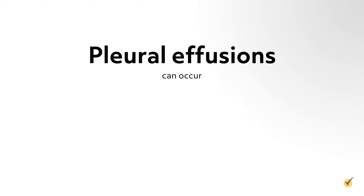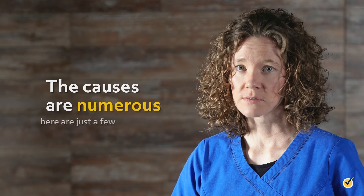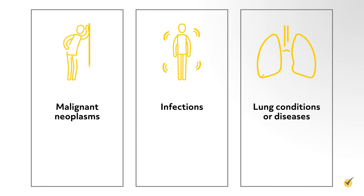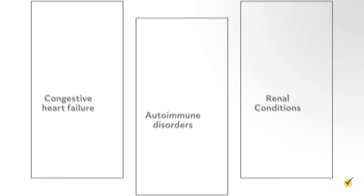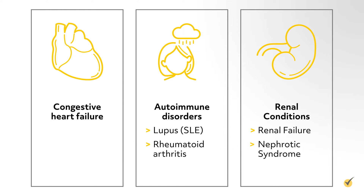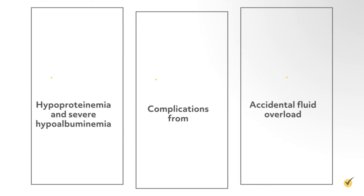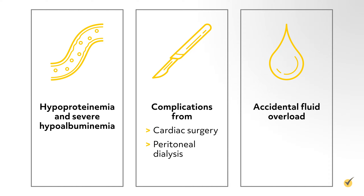Pleural effusions can occur in a variety of diseases or as a complication of therapeutic procedures. The causes are numerous — here are just a few: malignant neoplasms, especially breast and lung cancers; infections; lung conditions or diseases like asbestosis, mesothelioma, and pulmonary edema; congestive heart failure; autoimmune disorders such as lupus or SLE and rheumatoid arthritis; renal failure or nephrotic syndrome; hypoproteinemia and severe hypoalbuminemia; complications from cardiac surgery or peritoneal dialysis; and accidental fluid overload.